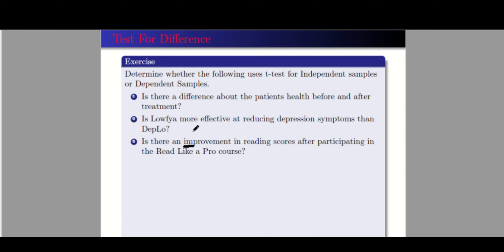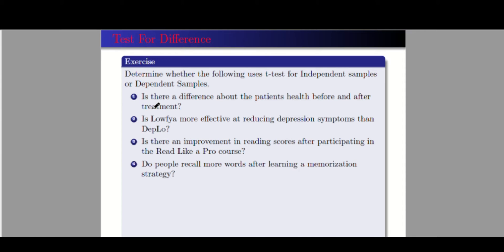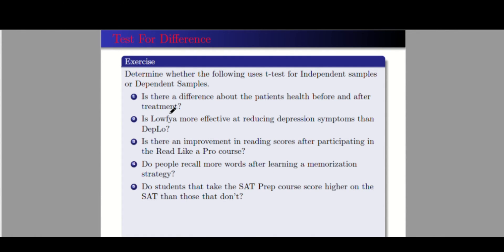Number three: is there an improvement in reading scores after participating in the Read Like a Pro course? This is dependent — to see improvement you must have the same group of respondents. Number four: do people recall more words after learning a memorization technique? This is still dependent — only one group. Number five: do students who take the SAT prep course score higher on the SAT than those who don't? Here we have two groups — those who took the course and those who did not — so this is independent samples.